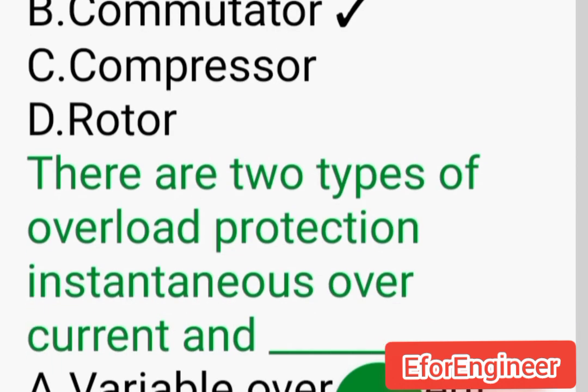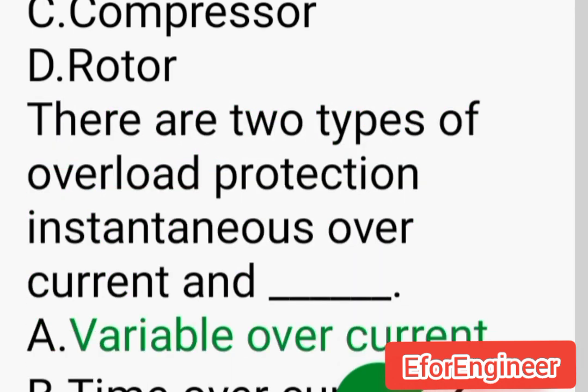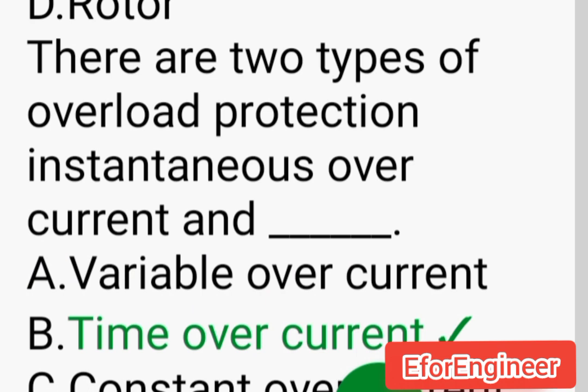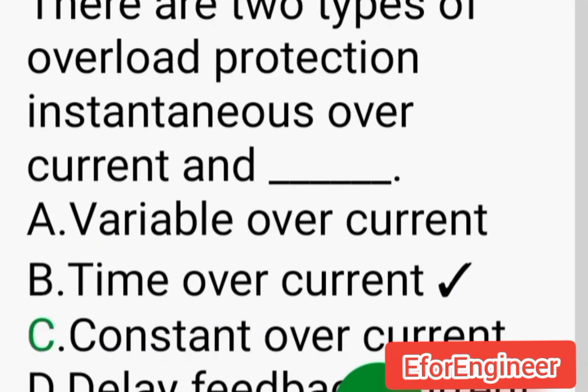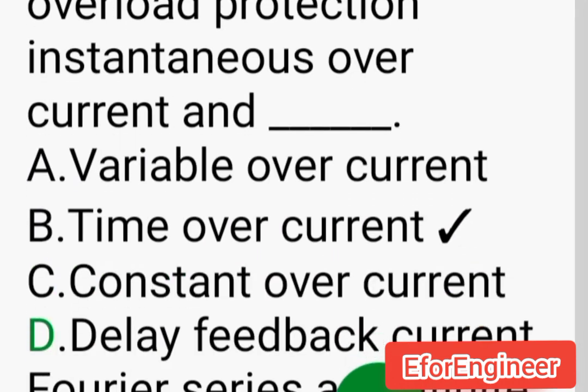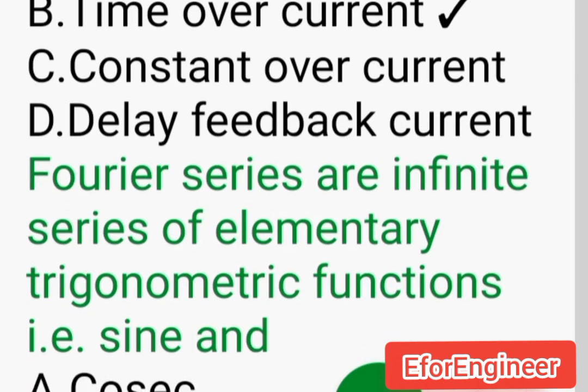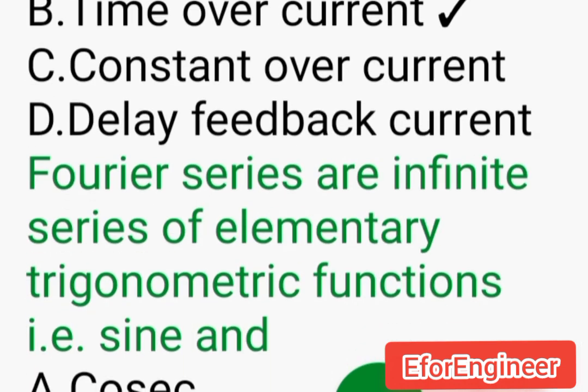There are two types of overload protection: instantaneous overcurrent and ___: A. Variable overcurrent, B. Time overcurrent, C. Constant overcurrent, D. Delay feedback current.